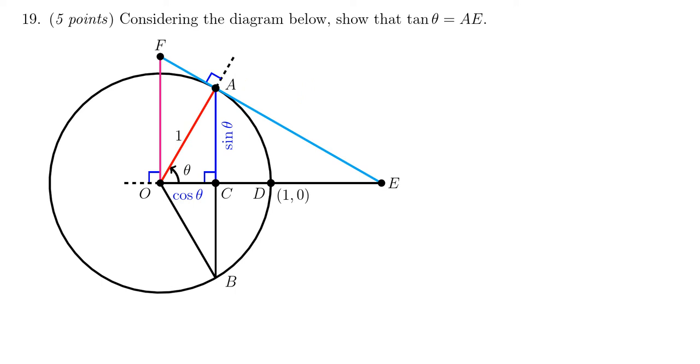And so the basis of this argument is going to be around similar triangles. So consider the triangle AOC right here. You're always going to use this triangle. And what are we going to compare it to? We need to use a right triangle that has AE in it, where we have AE right here.